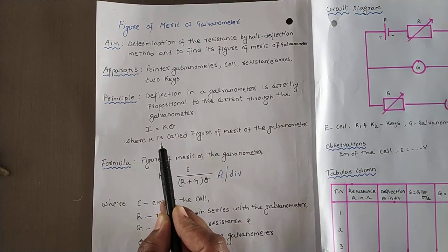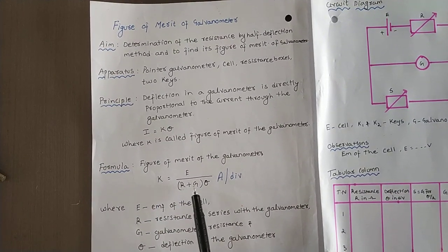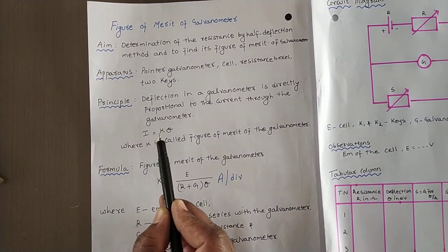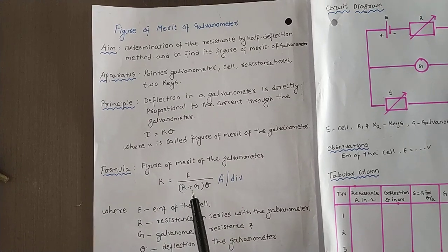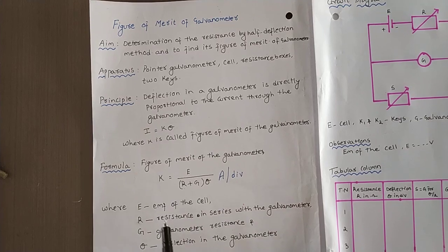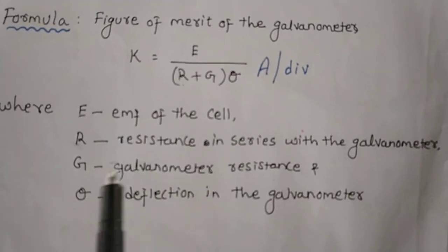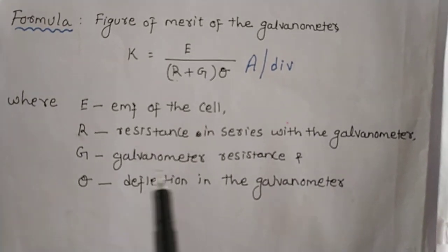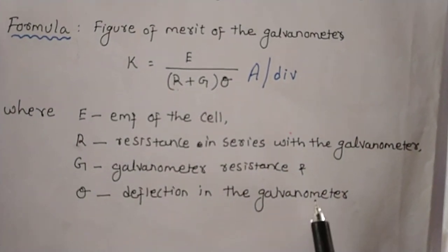The required formula to find the figure of merit is K equals E divided by (R plus G) into theta. Here K equals I by theta, and I means E by R plus small r, where small r is taken as G. The symbols used: E means EMF of the cell, R means resistance in series with the galvanometer, G means galvanometer resistance, and theta means deflection in the galvanometer.